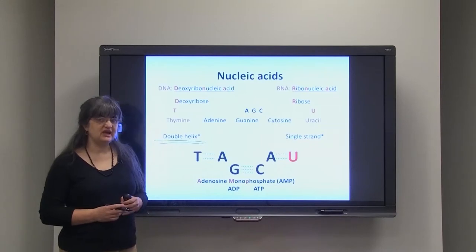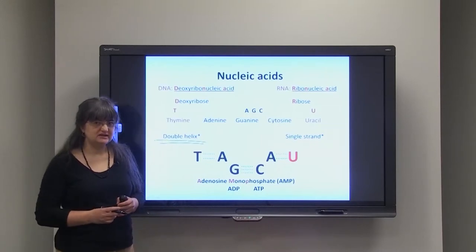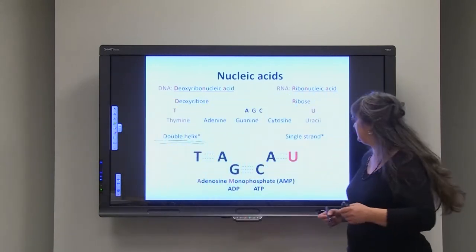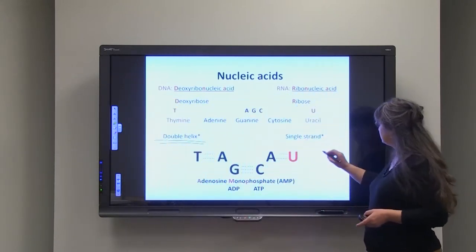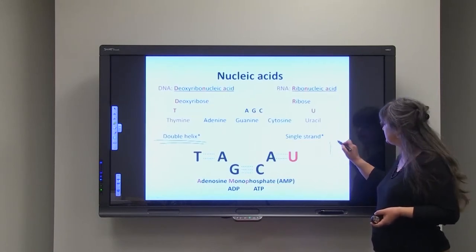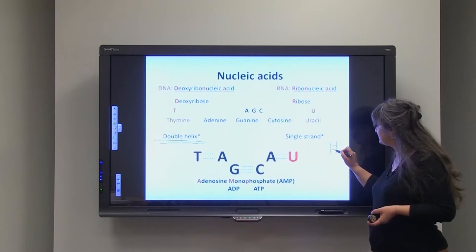Ribonucleic acid in most cases is single-stranded. However, some viruses have double-stranded RNA, and sometimes in our own body, like for instance transfer RNA, can have parts that are double-stranded.